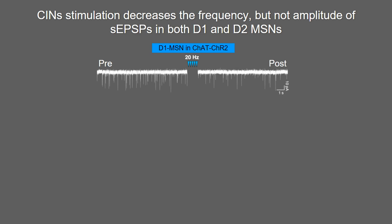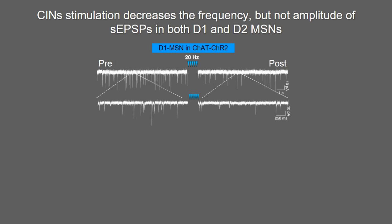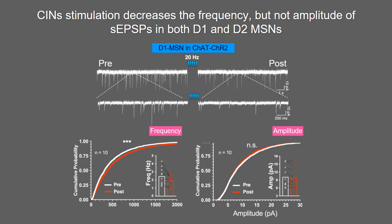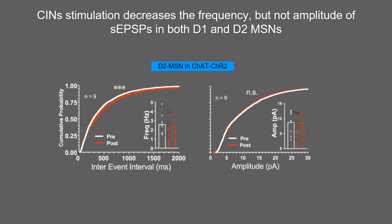When we look at spontaneous activity in medium spiny neurons expressing dopamine D1 receptors, there is a clear change in frequency following cholinergic interneuron stimulation. When we pool 10 recordings, there is a significant rightward shift of the cumulative distribution curve after stimulation. Interestingly, when we looked at amplitude, we saw no difference at all. For D2 MSNs, we saw exactly the same pattern: a rightward shift in frequency and no shift in amplitude.